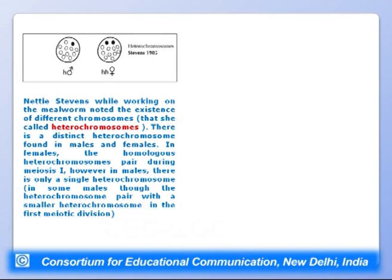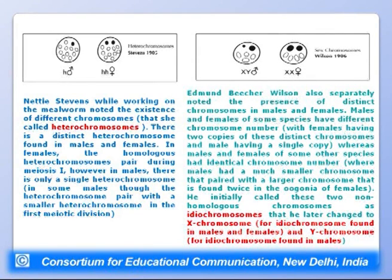Nettie Stevens, while working on the mealworm, noted different chromosomes she called heterochromosomes in males and females. In females, homologous heterochromosomes pair during meiosis I; in some males, there is only a single heterochromosome, while in others it pairs with a smaller heterochromosome. Simultaneously, Edmund Beecher Wilson independently noted the presence of these distinct chromosomes in males and females.